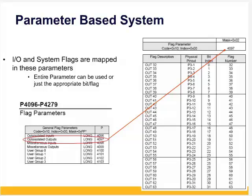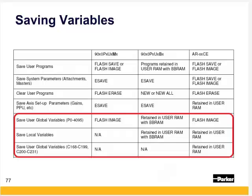Note that for system flags, these map to a long parameter, such as outputs 32 through 63 mapped to parameter 4097, allowing users to set more bits with an integer in one line of code instead of 32 lines of code for 32 bits.